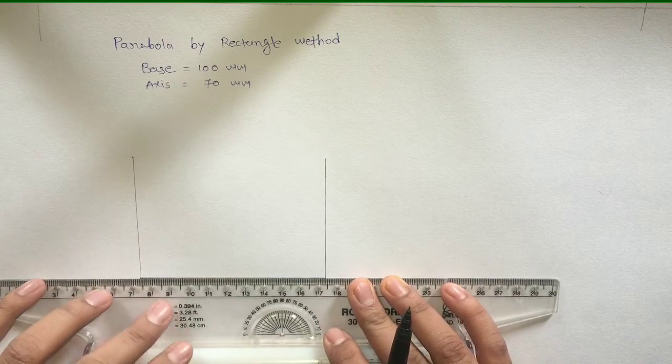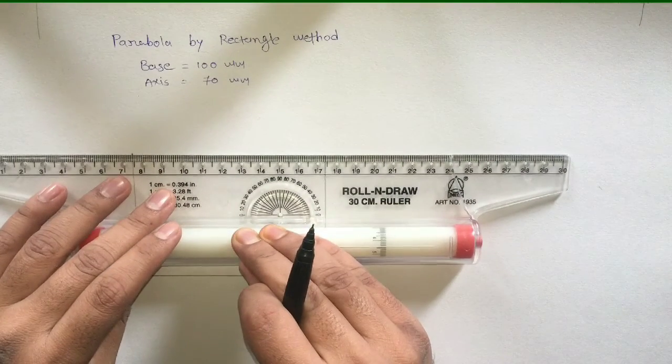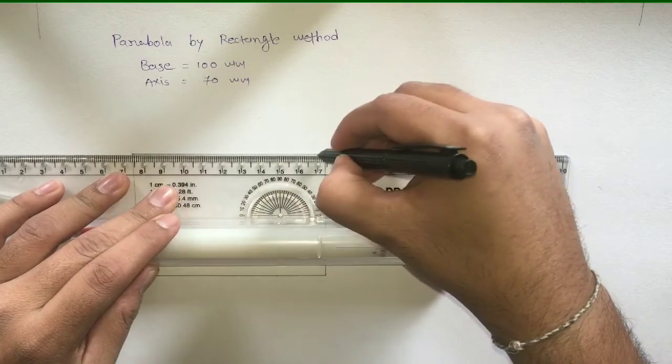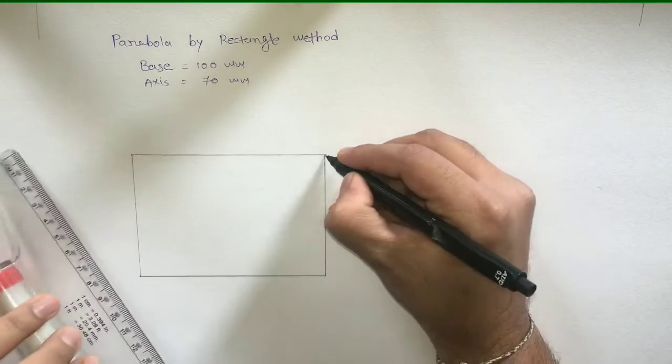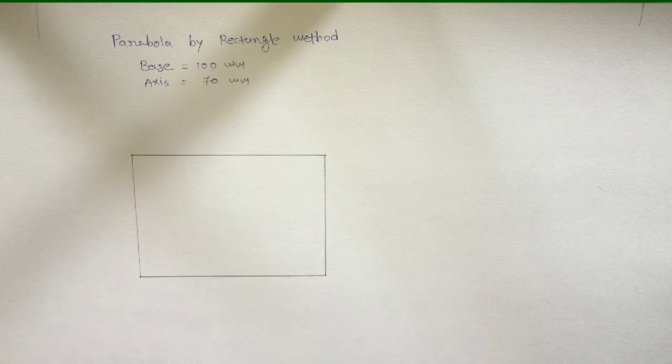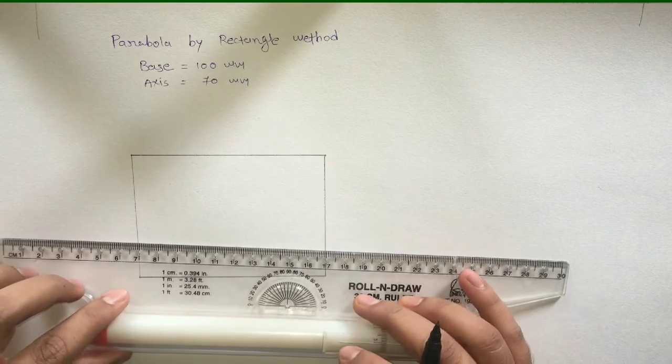The rectangle method of constructing the parabola and ellipse is quite similar. There is one minor difference between these two. In the ellipse, if you have seen my video, you have noted that we were dividing the rectangle into four equal parts.